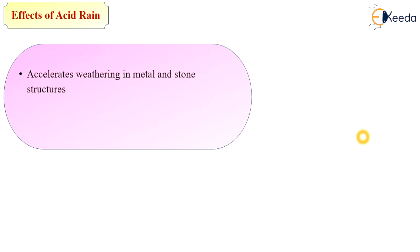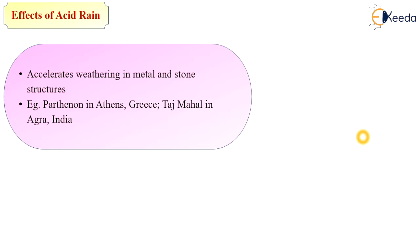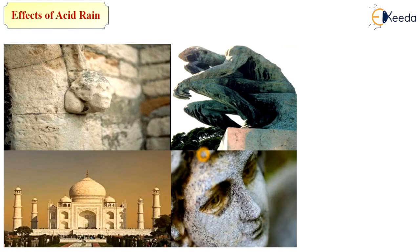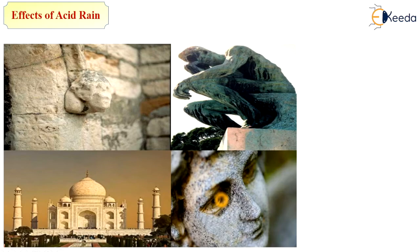Acid rain accelerates weathering in metal and stone structures. For example, the Parthenon in Athens, Greece, and in India, the Taj Mahal is one of the biggest examples affected by acid rain. In Agra, India, yellow spots are appearing on the surface of this white structure, and the construction material is deteriorating, also looking very bad aesthetically.